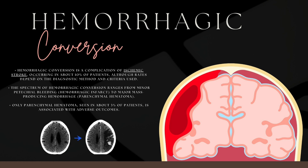Hemorrhagic conversion — also called hemorrhagic transformation — is a complication that can arise from an ischemic stroke. After an ischemic stroke resolves, some patients develop a hemorrhagic conversion, occurring in about 10% of patients. Rates are higher in patients who received thrombolytic treatment. The severity can range from minor petechial bleeding all the way to a mass-producing hemorrhage, which occurs in about 3% of patients, though that rate can change with thrombolytic treatment.